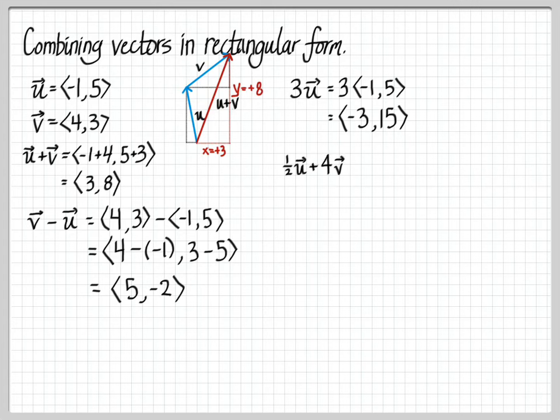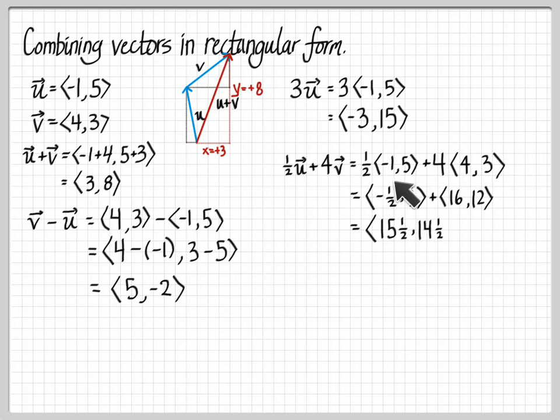And I can put all this together, like I could do something like one half u plus four v. So that's one half of u plus four v. And then I multiply u by a half, and I multiply v by four, four times four is 16, four times three is 12. And then I add, I have to do some fraction adding, 16 plus negative one half, 15 and a half, 12 plus five halves, this is two and a half, so I get 14 halves.